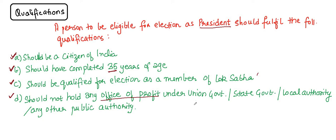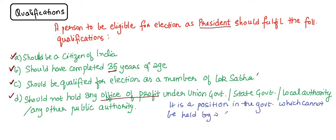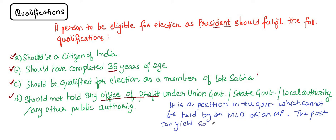What is the office of profit? The office of profit is a position in the government which cannot be held by an MLA or an MP. Such a position can yield salaries, perks, and other benefits apart from what he or she is already getting as a President, MLA, or MP. So if apart from your own salary and perks you are also yielding salaries and perks through other offices, that position is known as the office of profit.